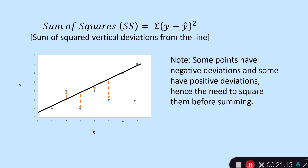A little more on sum of squares: some points have negative deviations from the line and some have positive deviations, so we have to square them before summing — otherwise they cancel out, similar to the variance formula. We position the line so that this sum of squares value is as small as possible.